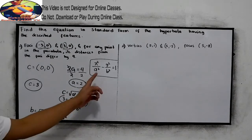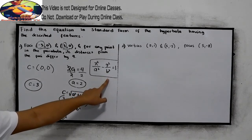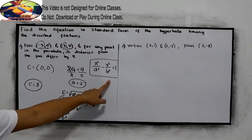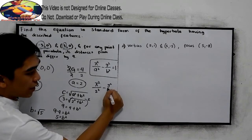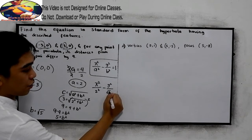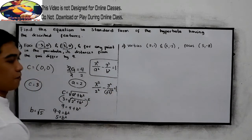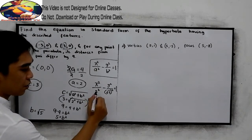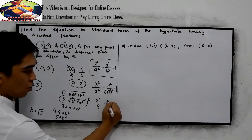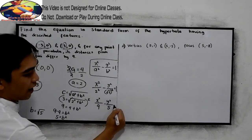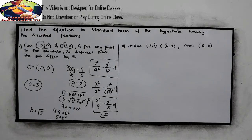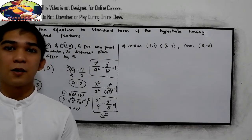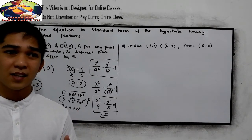Now we're ready to write the standard form. We have x² over 2², minus y² over (√5)², which simplifies to x² over 4, minus y² over 5, equals 1. To solve this properly, you need to master the introduction to hyperbola and the table for when the center is at (0,0) or at (h,k).